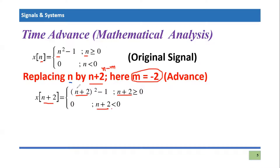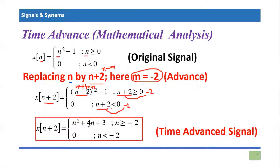Wherever n appears in the signal definition, it is replaced by n+2. Expanding (n+2)² gives n²+4n+4, so the expression becomes n²+4n+3. The interval shifts so that the condition n≥0 becomes n≥-2, and for n less than -2 the signal is zero. The point n=0 has shifted to n=-2, confirming the signal has experienced a time advance operation.